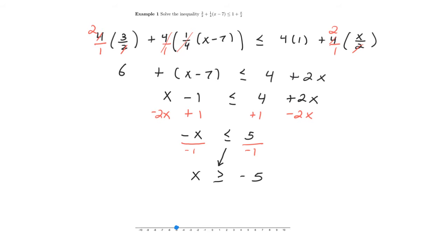A closed circle because in this inequality, it's not only greater than, it's greater than or equal to. And then I want to shade in the direction that is greater than negative 5. And this is our answer.